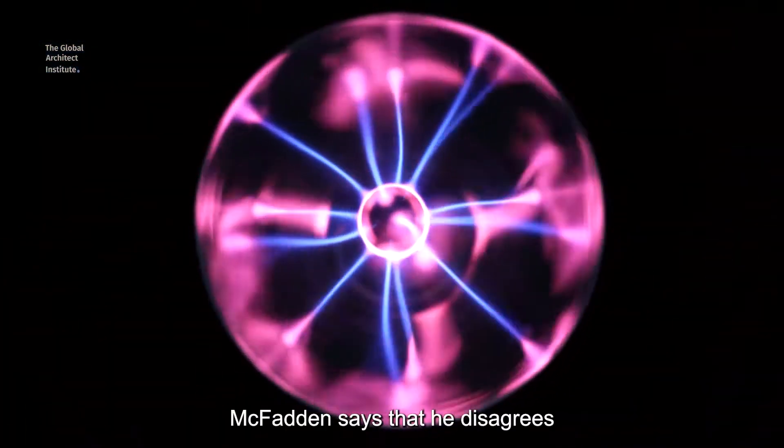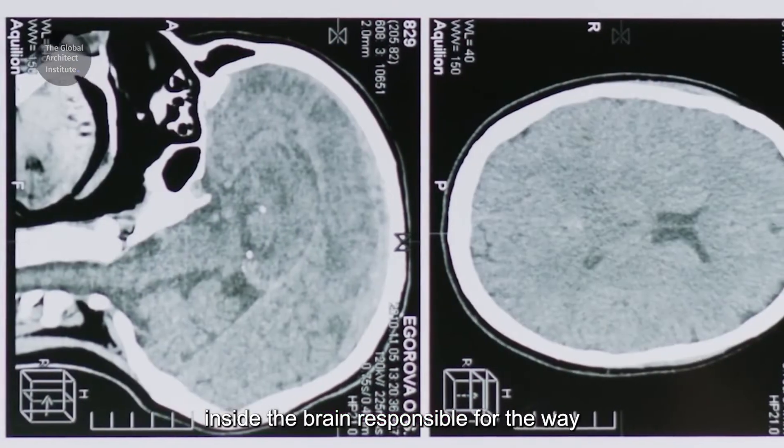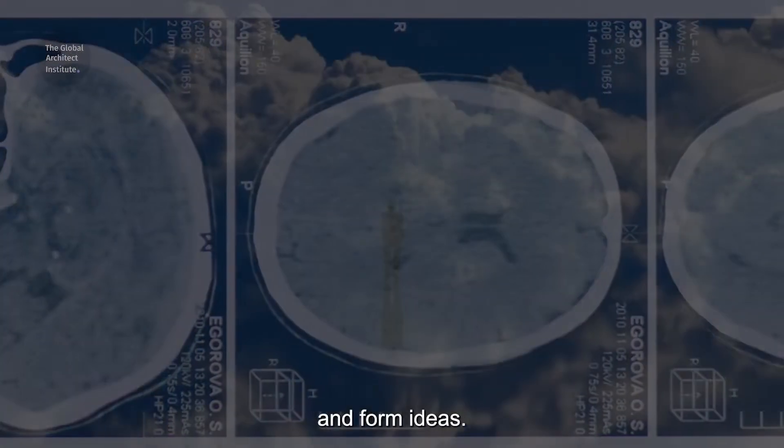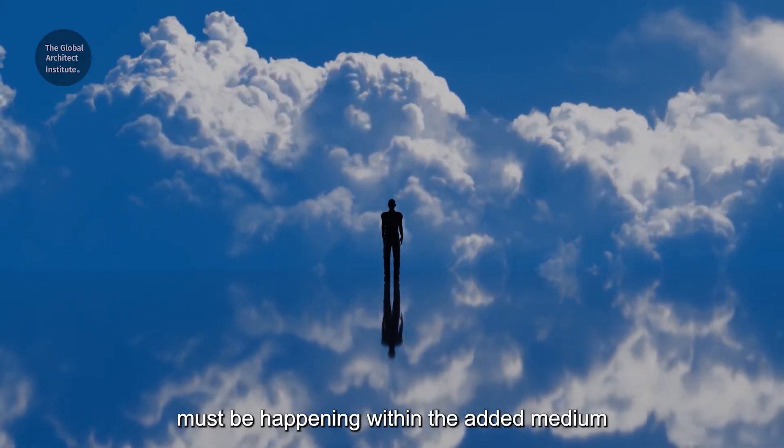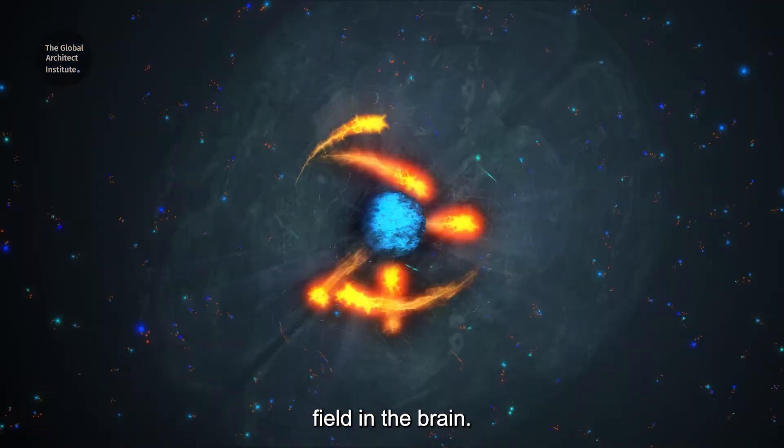McFadden says that he disagrees with the concept of physical structures inside the brain, responsible for the way pieces of information extend through our minds and form ideas. He says that this process must be happening within the added medium of an electromagnetic field in the brain.